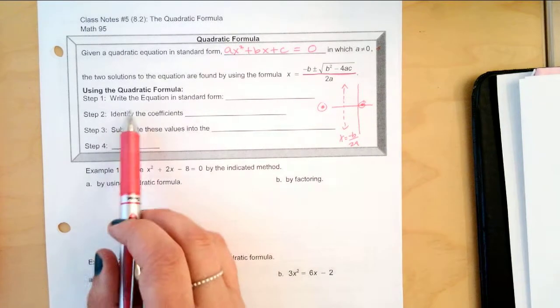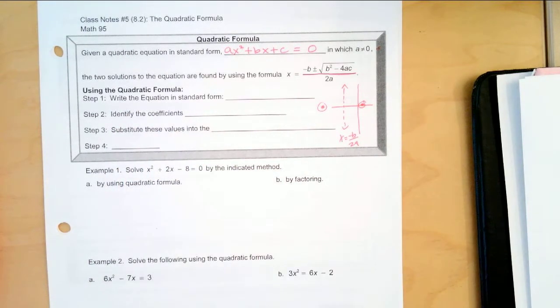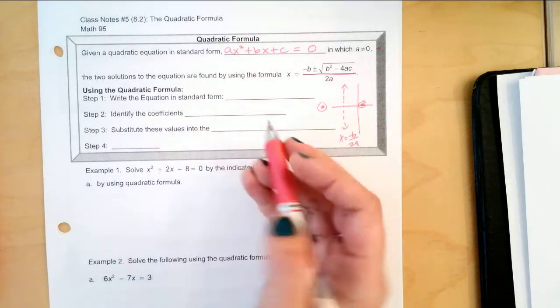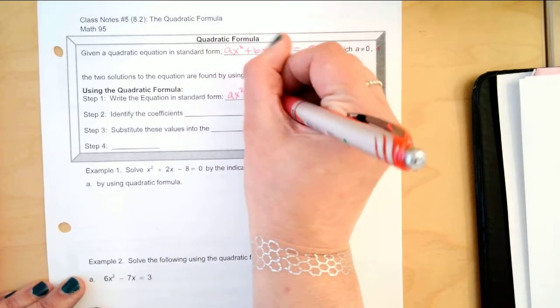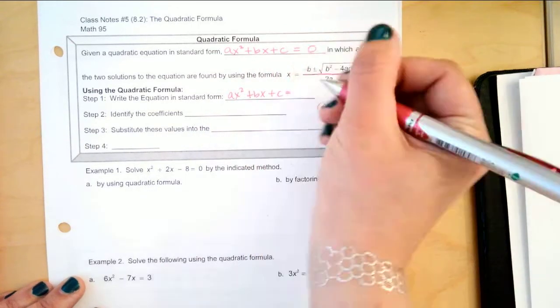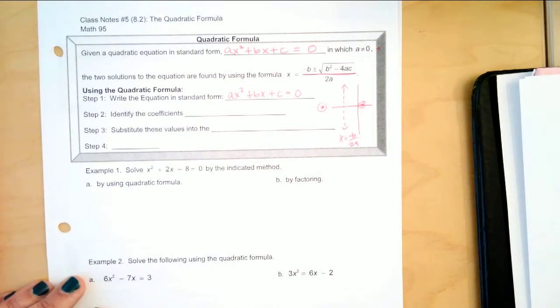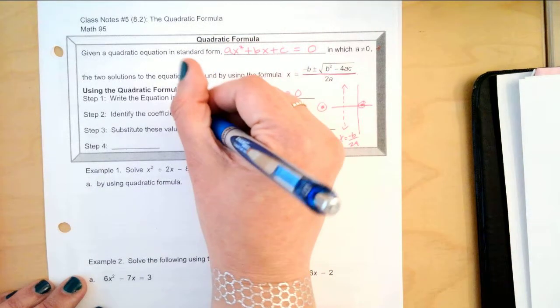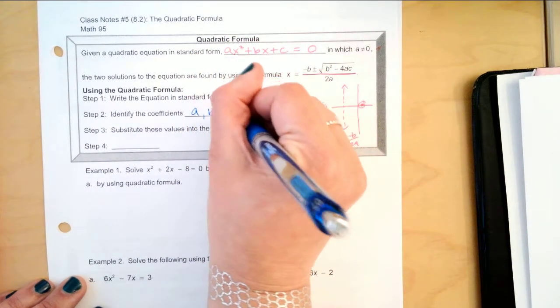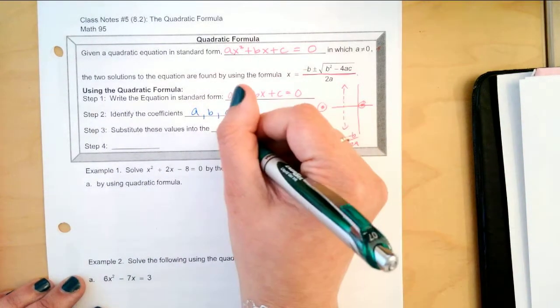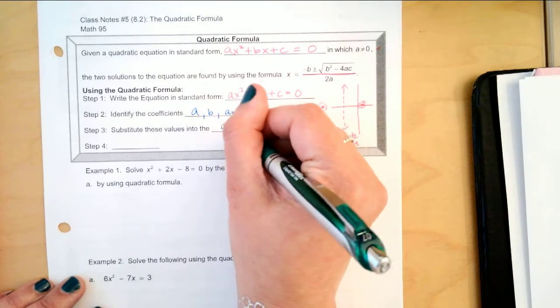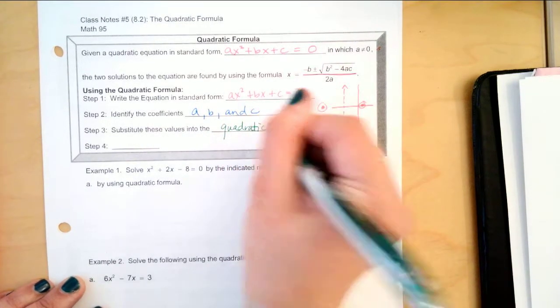So, using the quadratic formula, the first thing is we're going to write the equation in standard form, which we know is ax squared plus bx plus c equals 0. Good. We're going to identify the coefficients a, b, and c. And then, we're going to substitute those values into the quadratic formula.